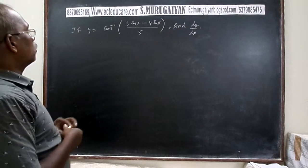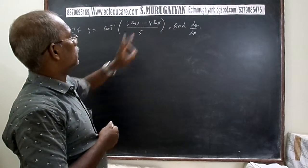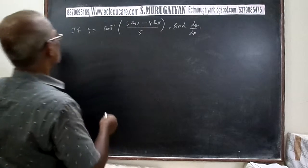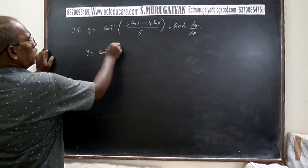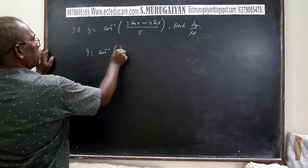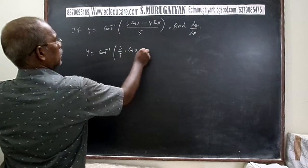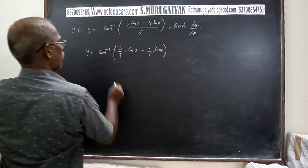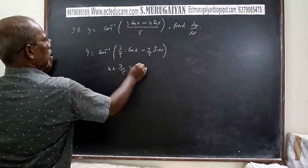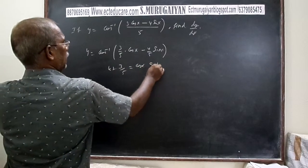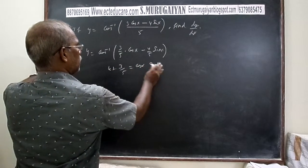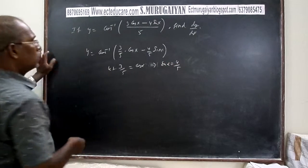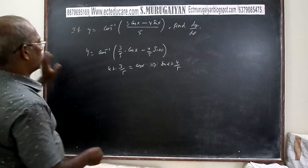The next question is: y = cos⁻¹((3 cos x - 4 sin x) / 5). This is a similar question. We separate it as cos⁻¹(3/5 · cos x - 4/5 · sin x). Taking 3/5 = cos α, this gives sin α = 4/5.